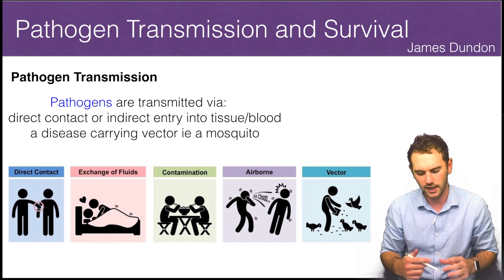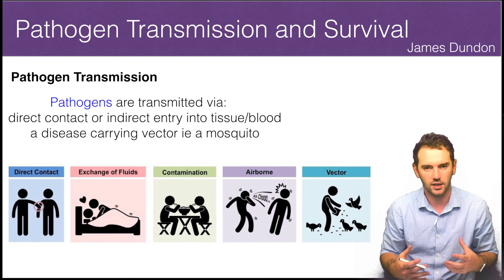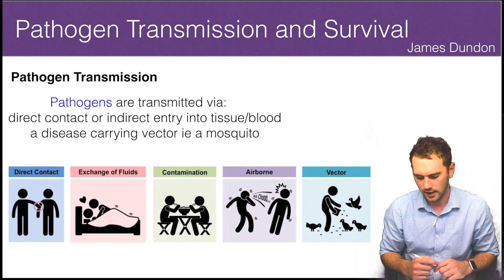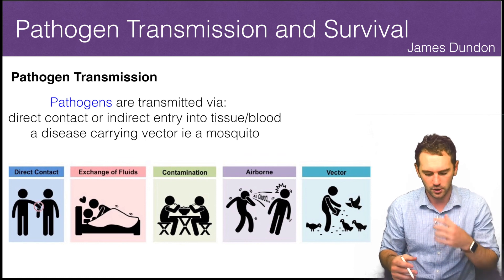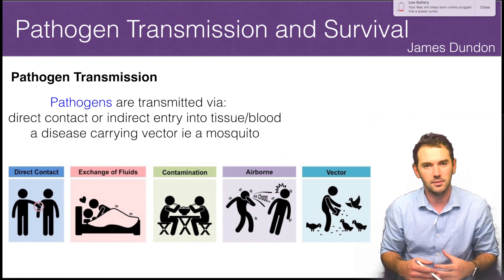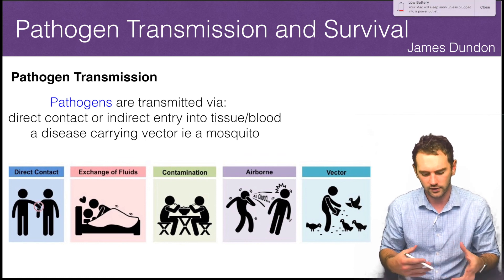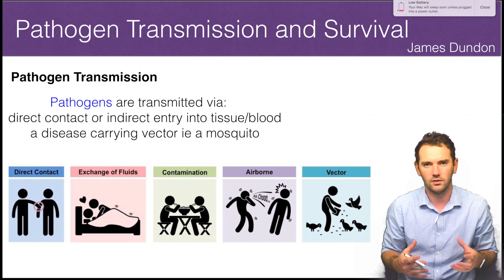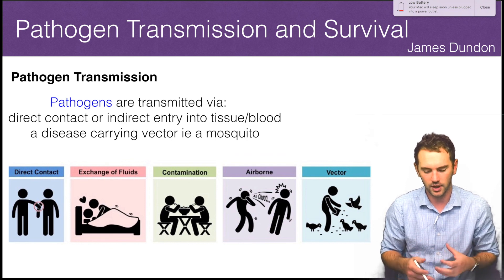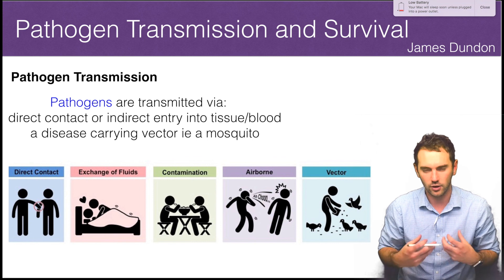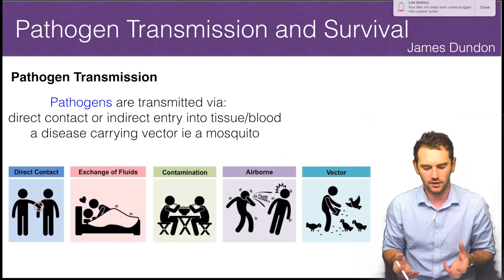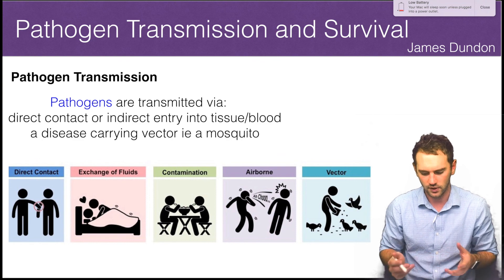Those are really the key types of transmission you need to be aware of for this course. But not just knowing them — understanding the implications of that type of transmission, and therefore what could we do in terms of being healthy to prevent pathogens entering our body. How could we prevent ourselves from getting sick through direct contact, or through exchange of fluids, and so on?